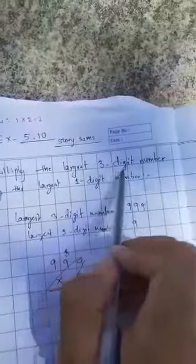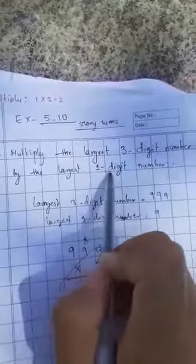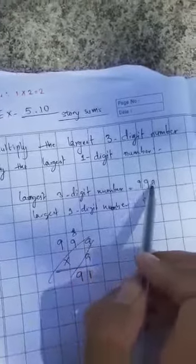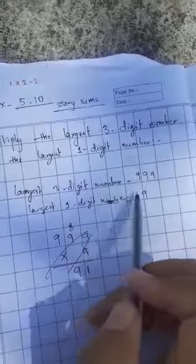Multiply the largest three-digit number by the largest one-digit number. So the largest three-digit number is 999, and the largest one-digit number is 9. Now you need to multiply them. I have not shown you directly, so I will do it again and show you how.